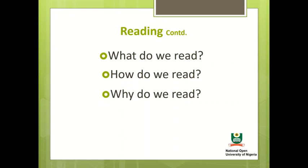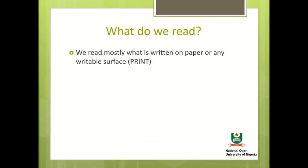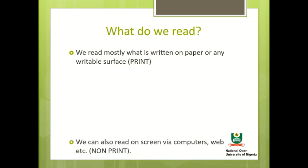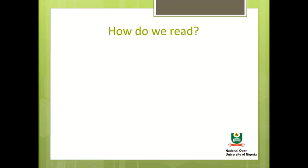What do we read? We read mostly what is written on paper or any writable surface — for example, textbooks, magazines, newspapers, handbills, or pamphlets. These we call print. We can also read on screen via computers or the internet, and these are non-print.